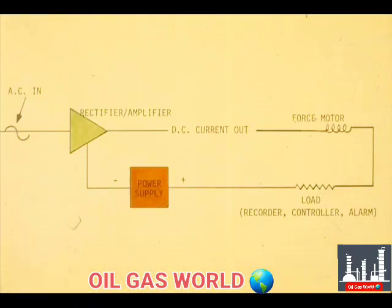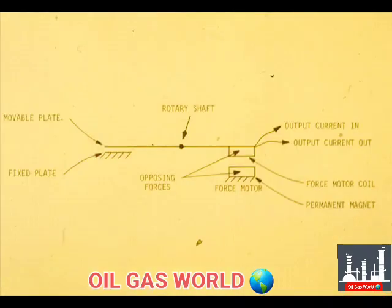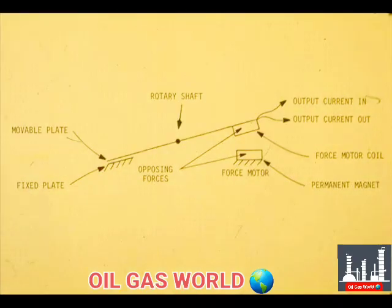The DC output current goes through a force motor and the load. The load includes the various loop items. The output current returns to the power supply. The output current passes through the force motor. The force motor coil is actually an electromagnet. Notice that the electromagnet and permanent magnet oppose each other. Increased current in the force motor causes the right end of the beam to rise and the left end to lower. The force motor supplies negative feedback.